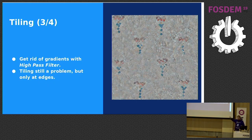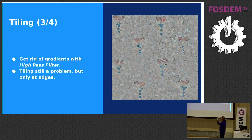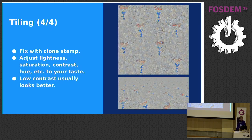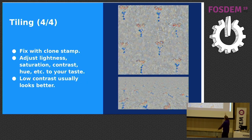The high-pass filter removes gradients and is much better for tiling. To fix remaining tiling seams, you just use the clone tool and fix them — that's the most common approach. Then you can adjust brightness, saturation, contrast, and hue. You can see that it's tiling really well even with perspective in the bottom. Low contrast usually looks better — try to make your textures more color-focused; it tends to look better in game.